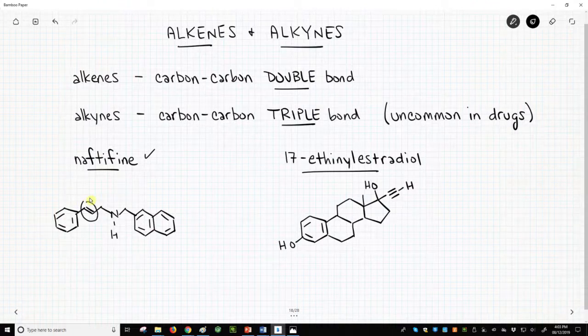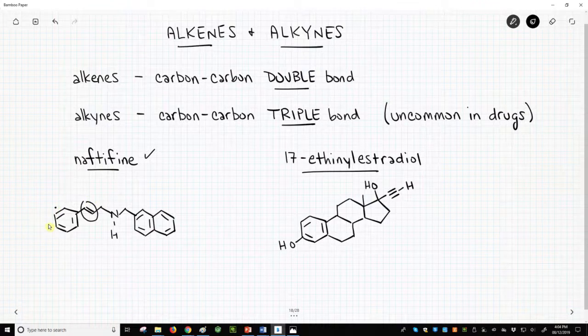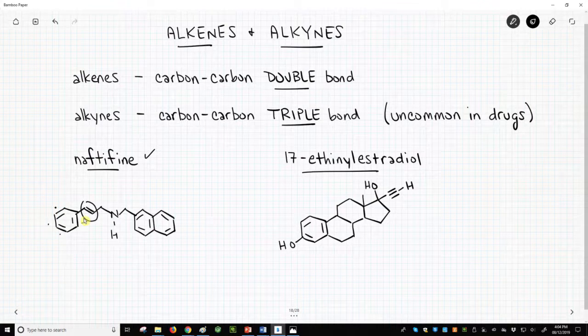Naftifine has many more carbon-carbon double bonds. These are in fact alkenes, but we will learn a special name for this arrangement of multiple double bonds in a six-membered ring in a later video.